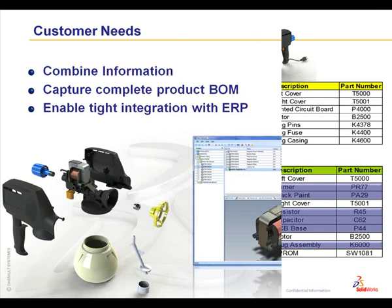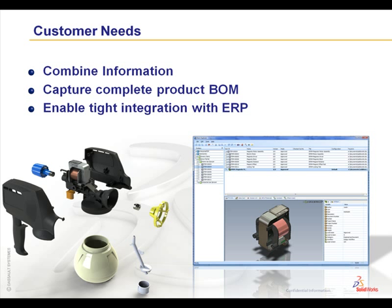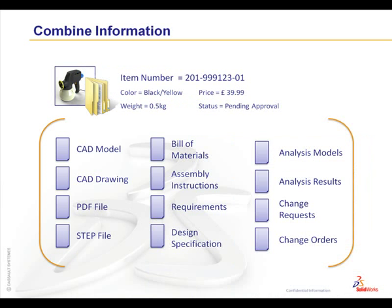In researching items, it was clear to see that the main customer needs were the ability to combine different data together, author the complete BOM, and tightly integrate with the current ERP procedures. To combine data, you can look at an item as a container. It can contain one or all of the design information for a particular product. Here for item number 201, the CAD data, assembly instructions, analysis results, and much more are all conveniently grouped in one container.